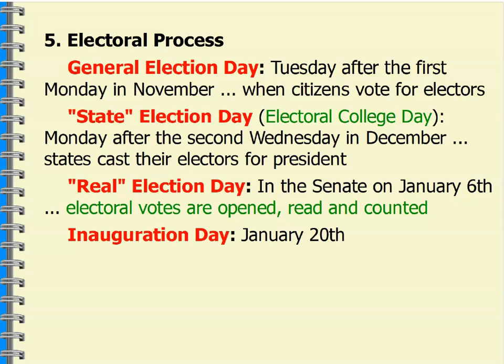Number five in the electoral process: general election day is always the first Tuesday after the first Monday in November. That is according to the Constitution in terms of how that takes place. That would be when citizens are voting for the electors — we always think we're voting for candidates, but we're really voting for electors because states conduct elections.